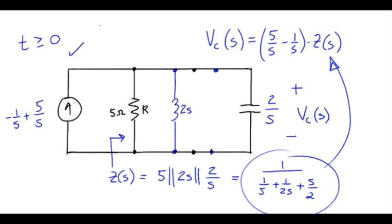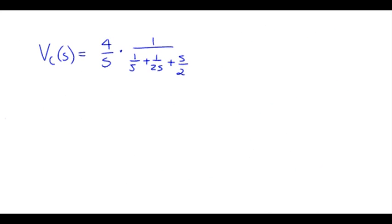I'm going to work on this a little bit just to put it into a little simpler form. So let's get a common denominator here. For this, we'd have 5 times 2S times 2. So that gives us the 2S times 2 for that term. Then we would have 5 times 2 for this.